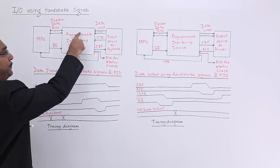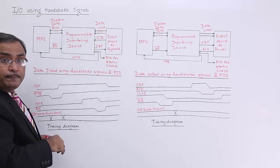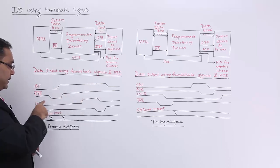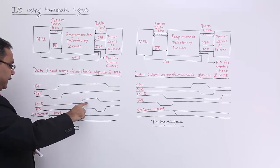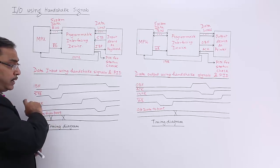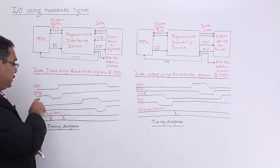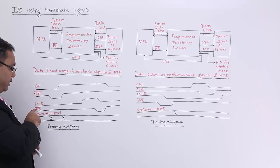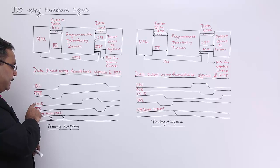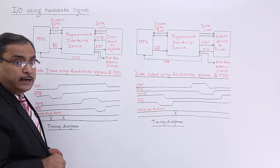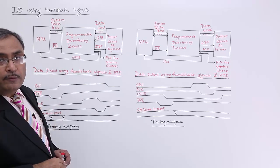To depict this, here is the timing diagram. We have the input buffer full line, strobe line, interrupt request line, RD-bar line, and input data from port lines. Strobe is active low, RD-bar is active low because bar is present, while interrupt request and input buffer full are active high because there is no bar above them.